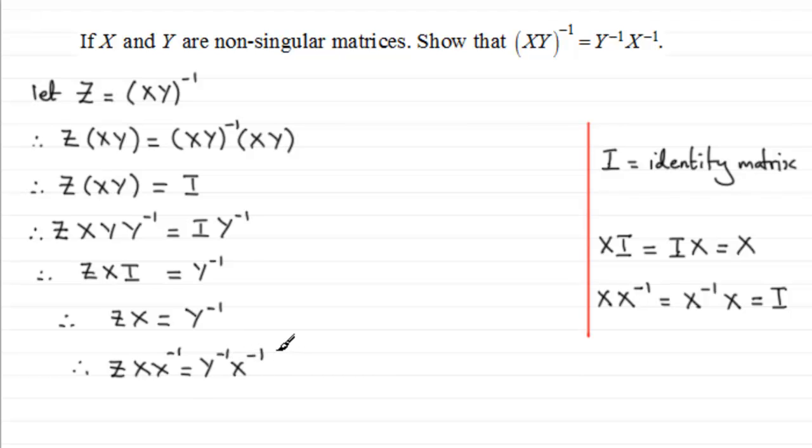And X times its inverse is going to be the identity matrix, so you're left with Z times the identity matrix equals the inverse of Y multiplied by the inverse of X. So what does this show? Well, it shows then that Z times I just gives Z.